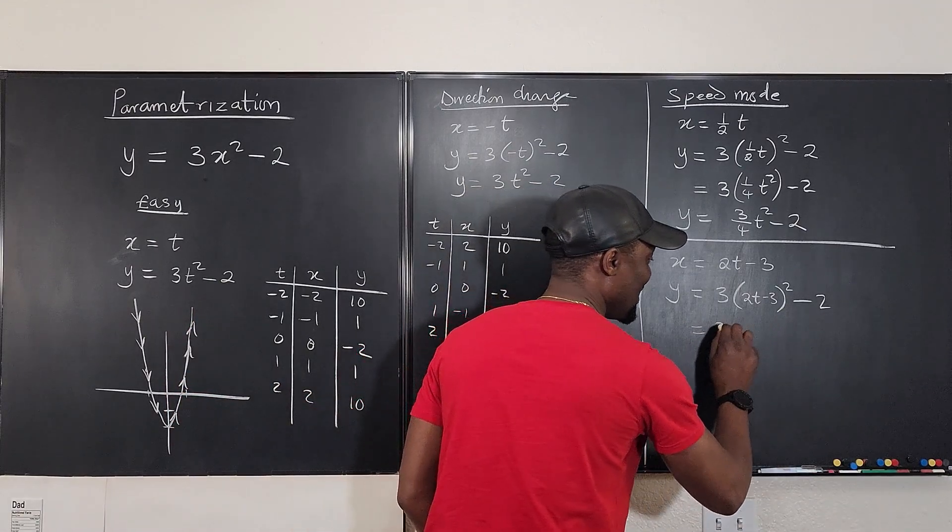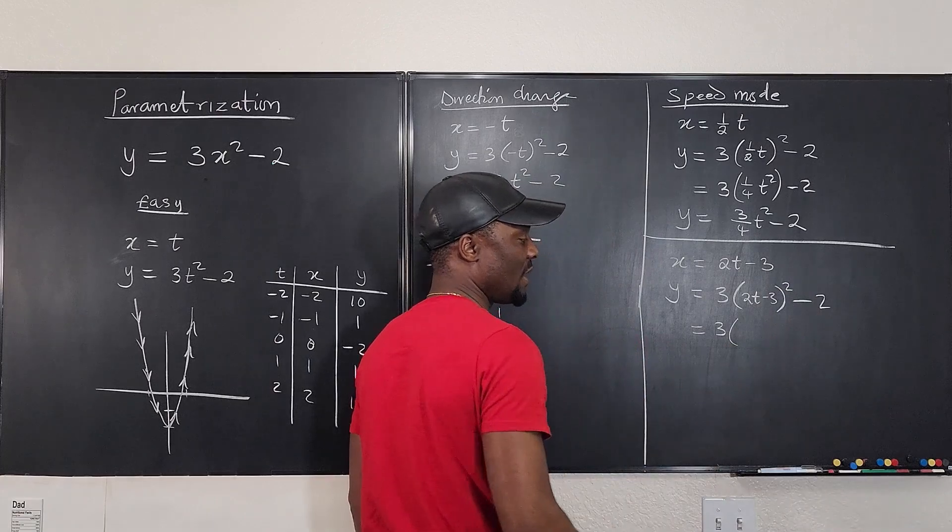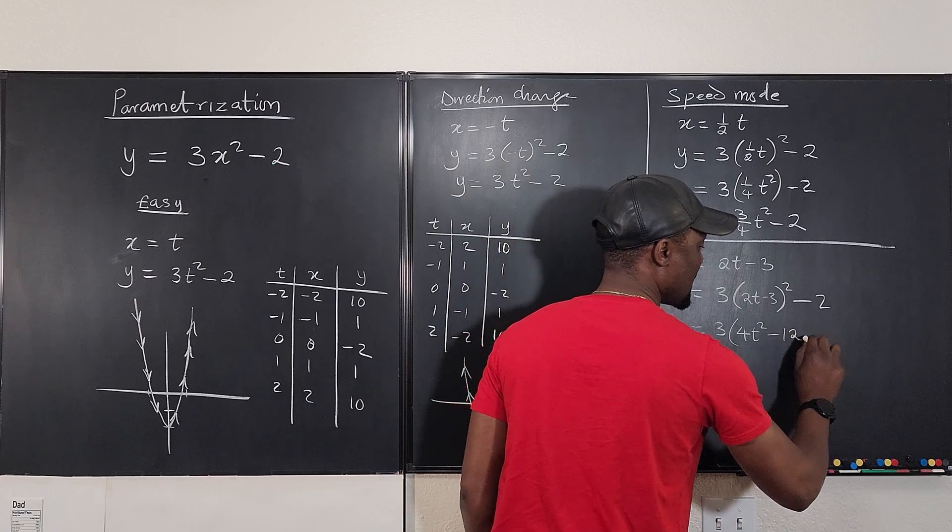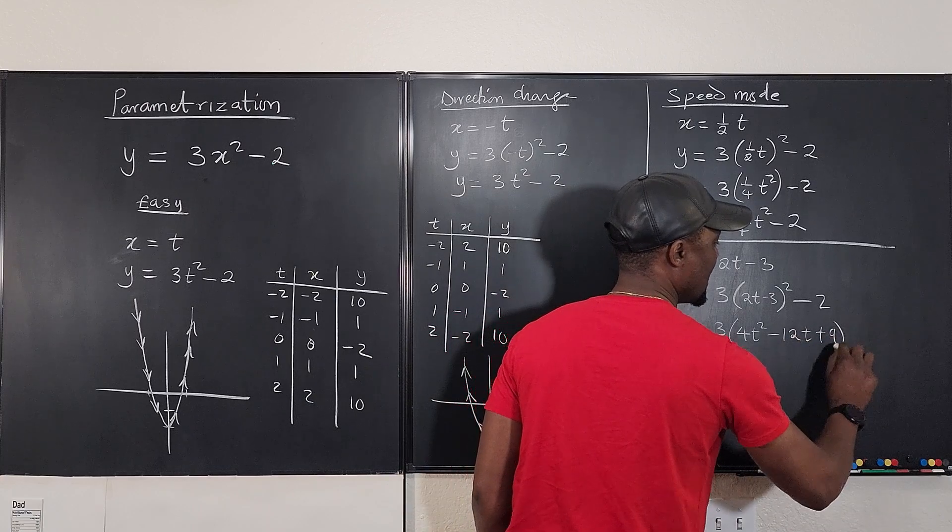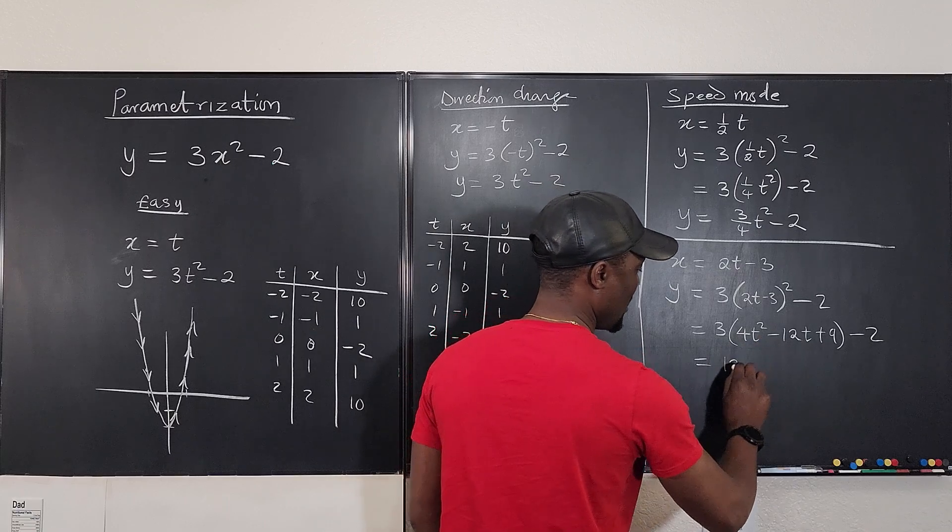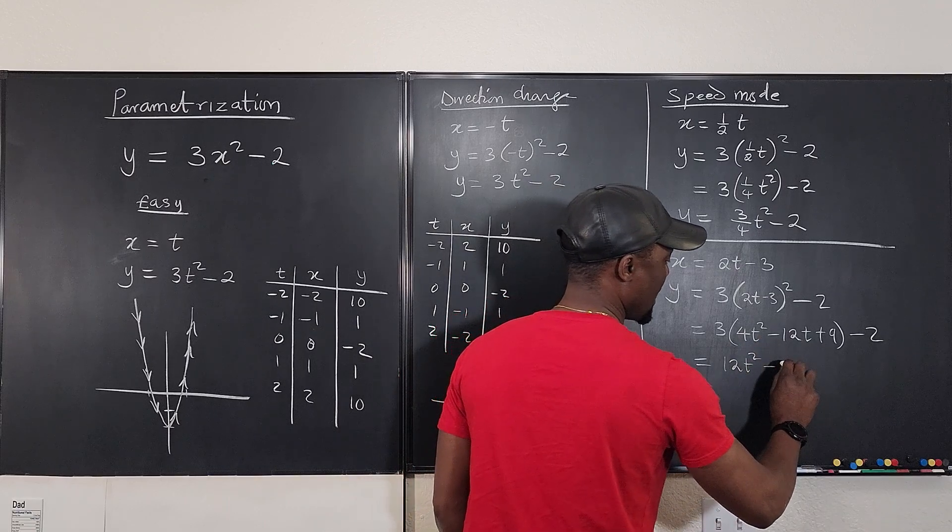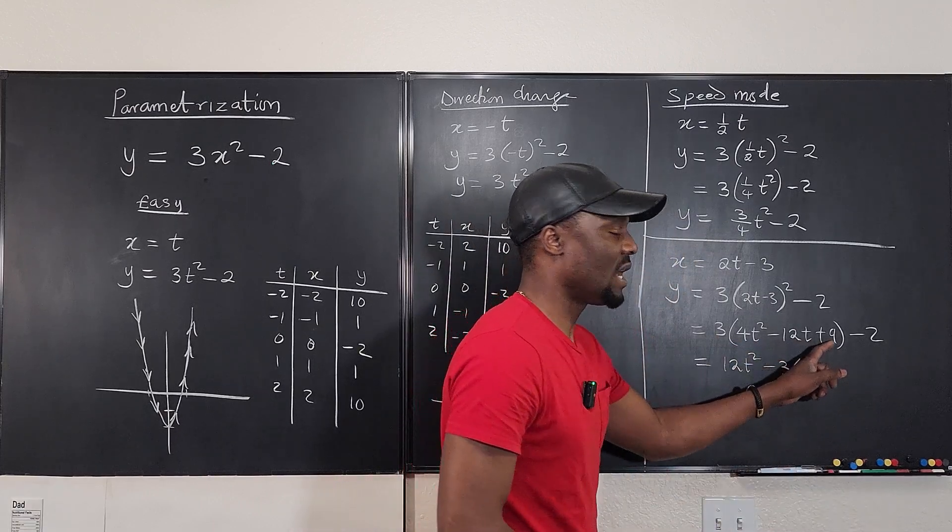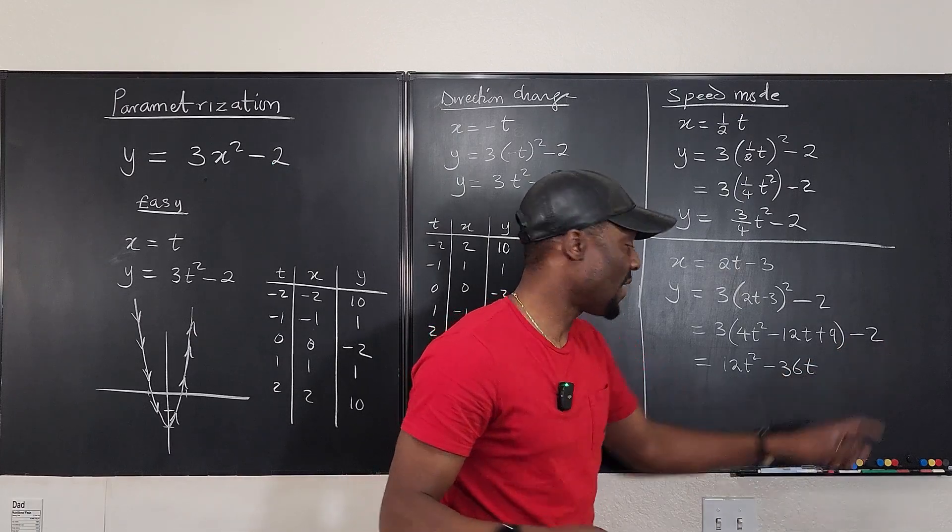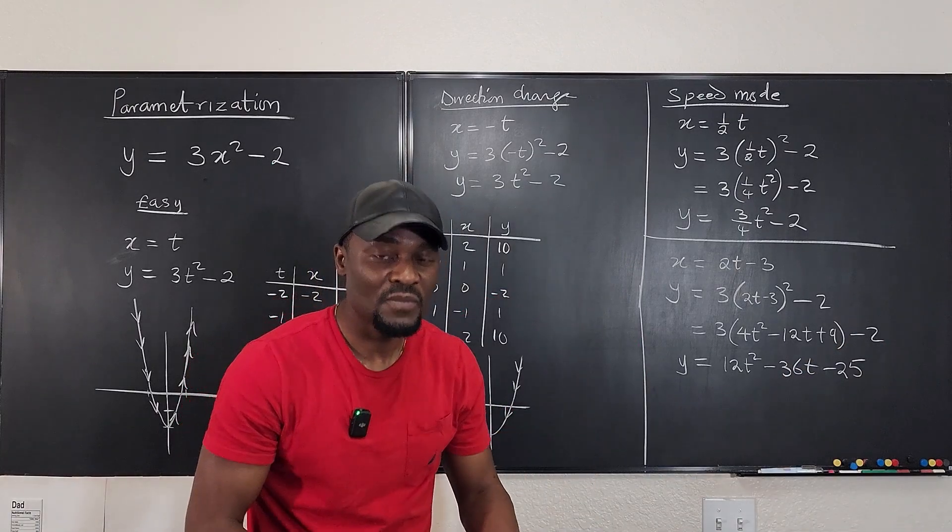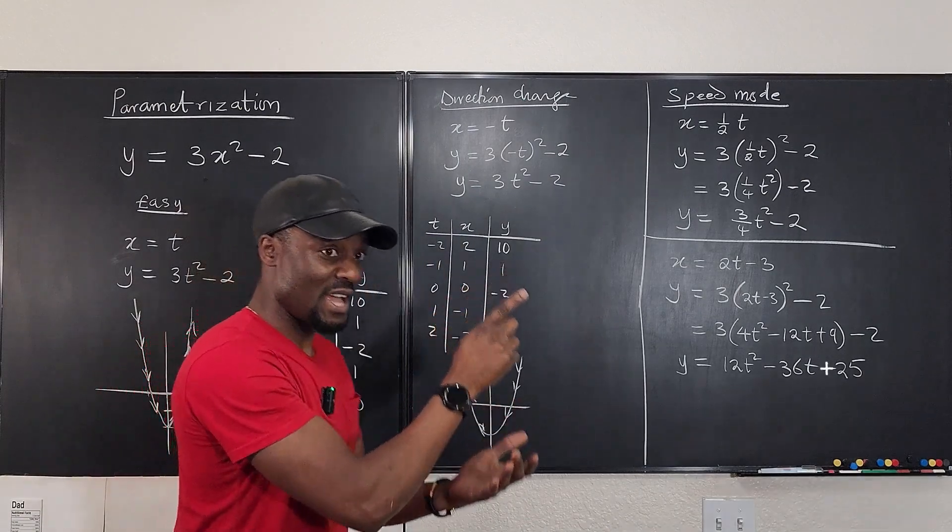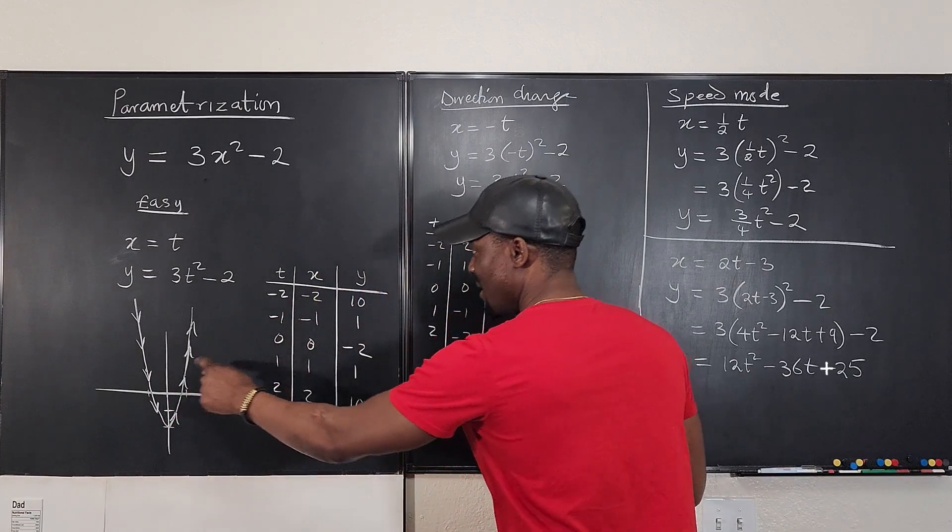Now it's your job to do this algebra. So don't attempt this if you know your algebra is shaky, just stick to the easy ones. So we're going to have 3 times, if we square this, we foil it out, it's going to be 4t squared minus 12t plus 9 minus 2. This is equal to 12t squared minus 36t. Then 3 times 9 is 27 minus 2, that's 25. So when you make your table, what are the values you're going to get? Well, the values are going to be different from this, but by the time you plot the curve, it's going to be this one.